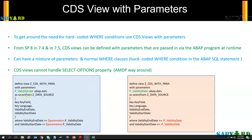Where are the parameters defined? At the top of the CDS definition, using the keyword 'with parameters' followed by the parameter name, a colon, and then the data element or ABAP type. If we have more than one parameter, they are separated by a comma. With these brief concepts covered, let us go and do our first exercise in the next chapter.